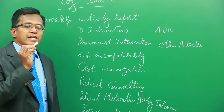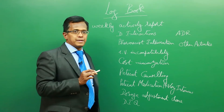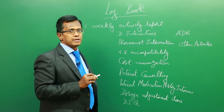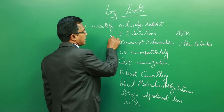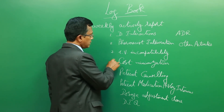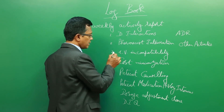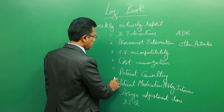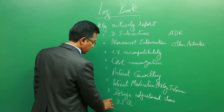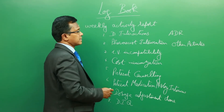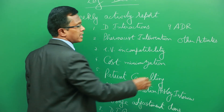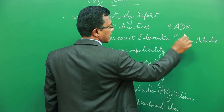So the weekly activity report of the logbook should contain the following information: drug interactions monitored, pharmacist intervention done, any IV incompatibilities observed, any cost minimization done, any patient counseling done or patient medication history interview done, any dosage adjustment done, any drug information query answered, any adverse drug reactions monitored, and any other pharmaceutical care activities — whatever patient-related activities are done by the clinical pharmacist.